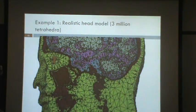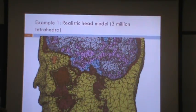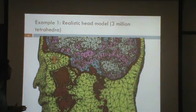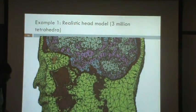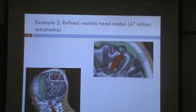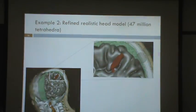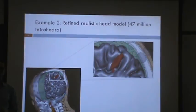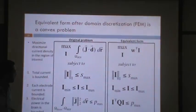One example head model used for discretization contains three million finite elements, but as you can see, it is still coarse and doesn't fully capture the detail of the cortical surface and brain structure. So we used another model developed by a colleague, ensuring the anatomy is as accurate as possible, and that conductivities are also estimated as accurately as possible.